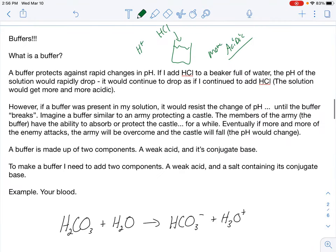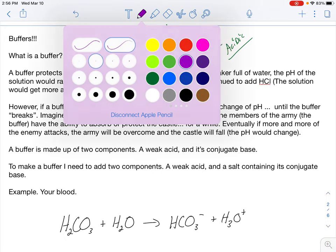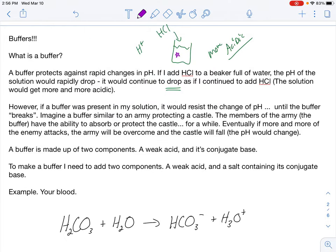Now, it would continue to drop as I add. If I continue to add acid, it would continue to drop. It would get lower and lower and lower. It would get more and more acidic. If a buffer was present in here, and I'm going to draw two shapes in here. I'm going to draw a star and a square, because a buffer has two components. What's going to actually happen? Well, the buffer would resist change in pH. So it would not become more acidic until the buffer, quote-unquote, breaks.